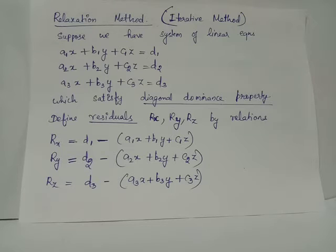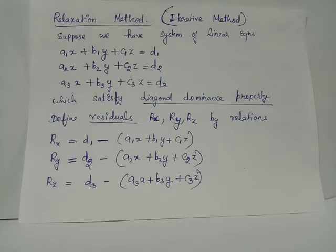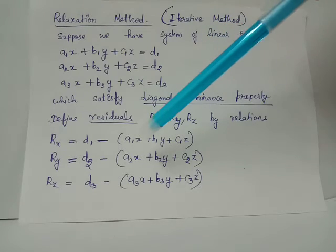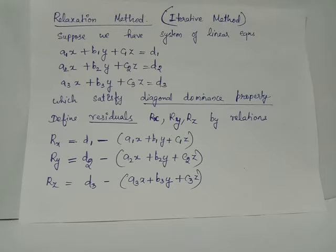In these residual equations, we first assume x, y, and z take zero values. Suppose we increment x by 1, that is delta x equals 1, keeping y and z constant at zero. Then rx equals d1 minus a1, because y and z are zero and x takes the value 1.